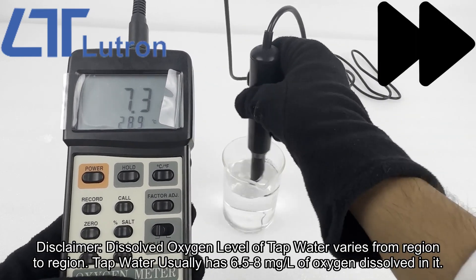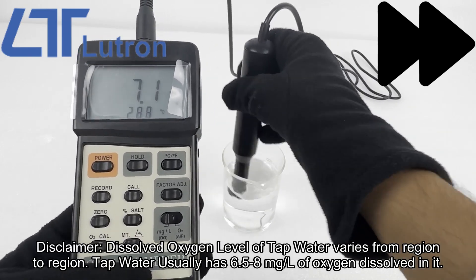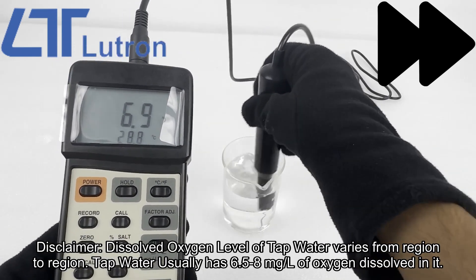Disclaimer: dissolved oxygen level of tap water varies from region to region. Tap water usually has 6.5 to 8 mg per liter of oxygen dissolved in it.